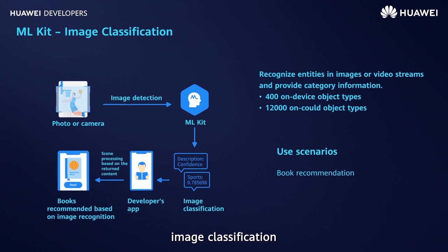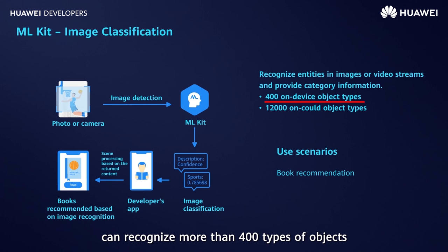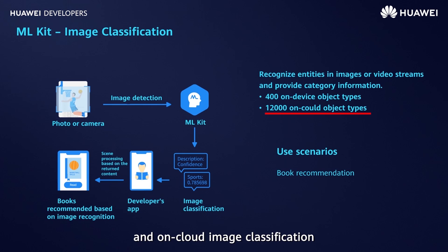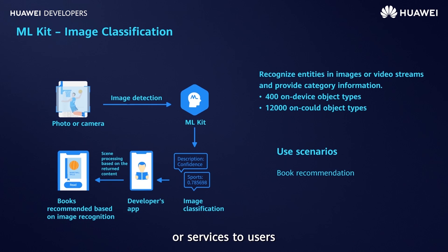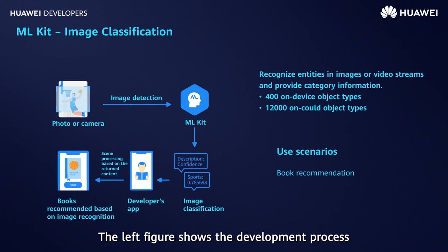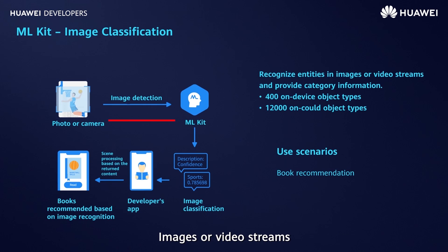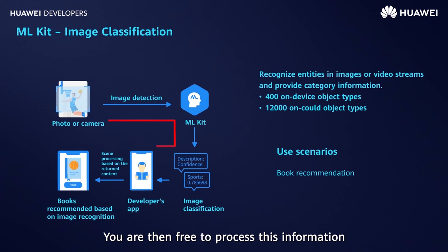Third, image classification. On-device image classification can recognize more than 400 types of objects, and on-cloud image classification can recognize more than 12,000 types of objects. You can integrate this capability to classify images, which you can then use to recommend products or services to users, such as a book recommendation service. Images or video streams are input into the ML SDK for detection, and you are then free to process this information however you see fit.